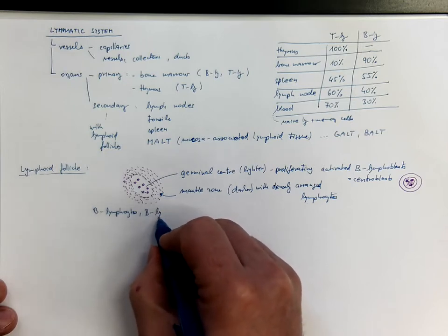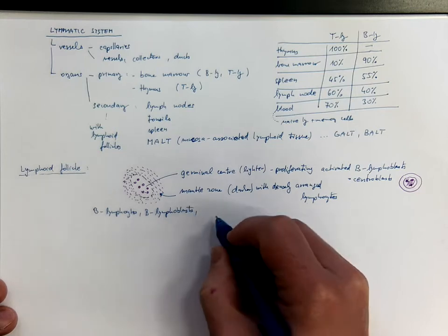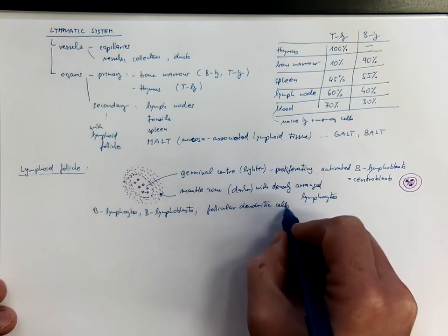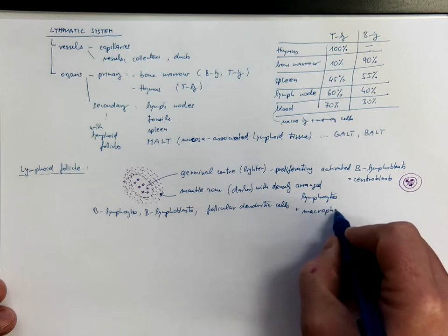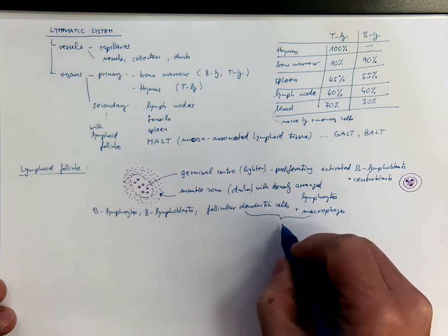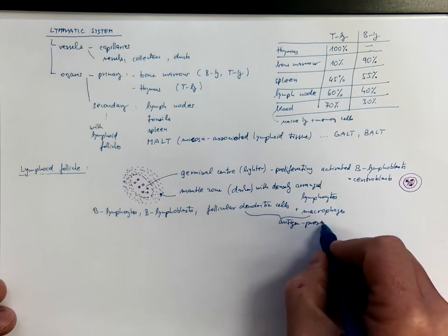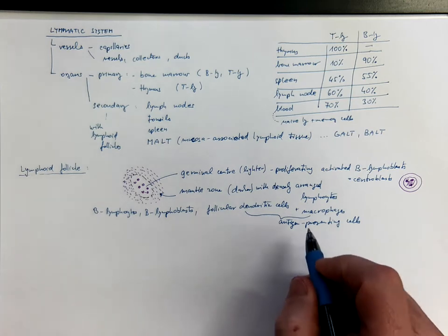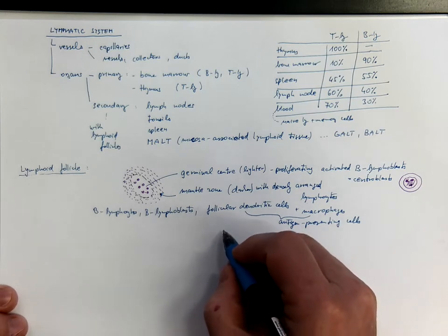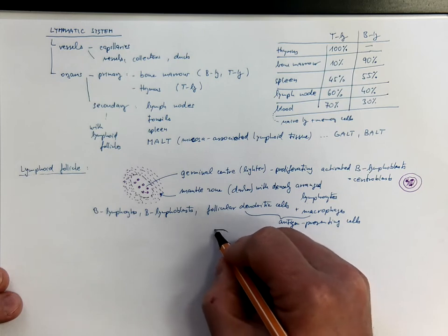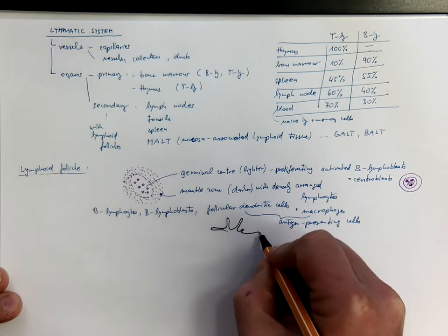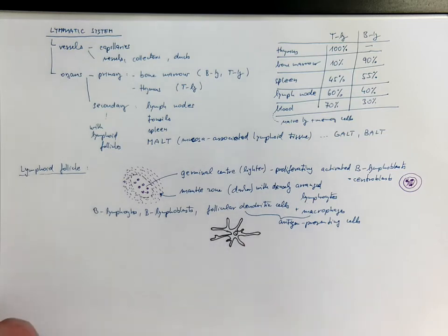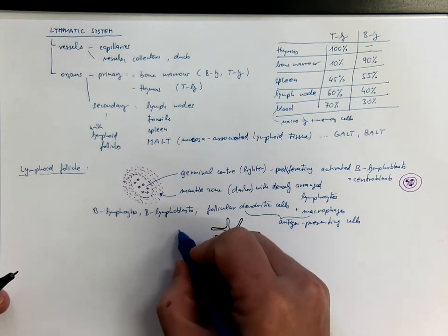So, we get B lymphocytes, B lymphoblasts. We got also follicular dendritic cells and macrophages, both being antigen-presenting cells. We've already got a scheme of a macrophage in the chapter devoted to connective tissue cells. And the follicular dendritic cells has long processes and it performs phagocytosis, so there is an antigen.